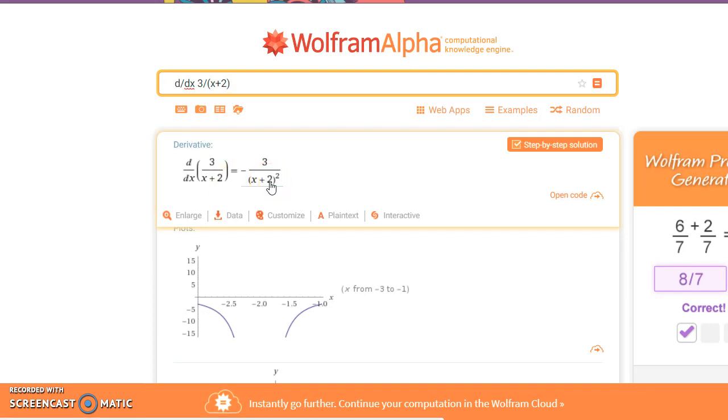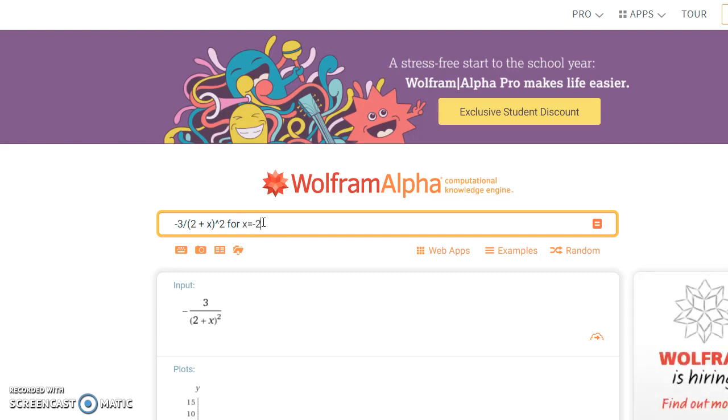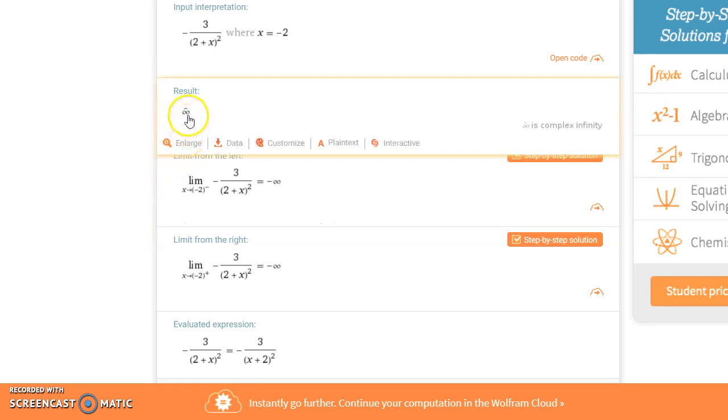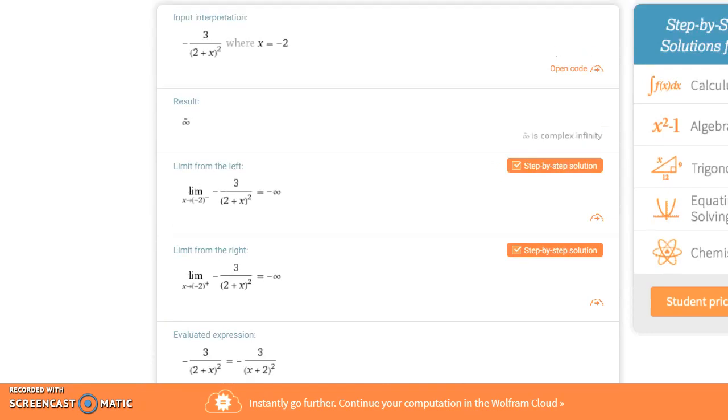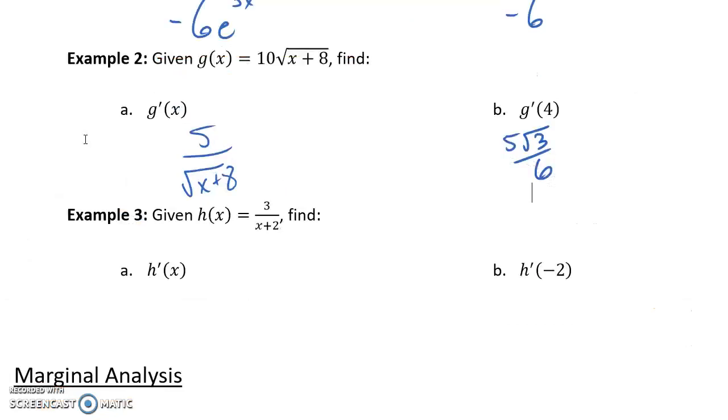And then we generate our result, which we can then evaluate for x equals negative 2. And our result is this sort of strange infinity sign with that little symbol over it. And then a lot of other statements to basically tell us that this result doesn't exist. And we could think of this a little bit more intuitively. In the denominator, we have 2 plus x, which in this case is negative 2. So that would give us 0 squared, which means we're dividing by 0. So in this case, that result would not exist.